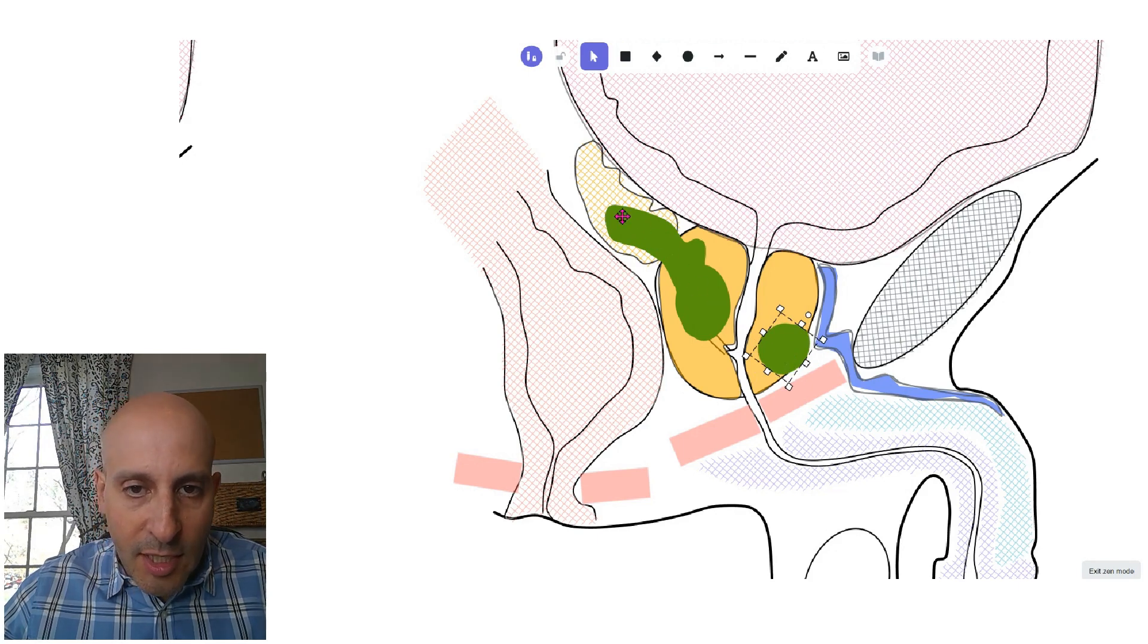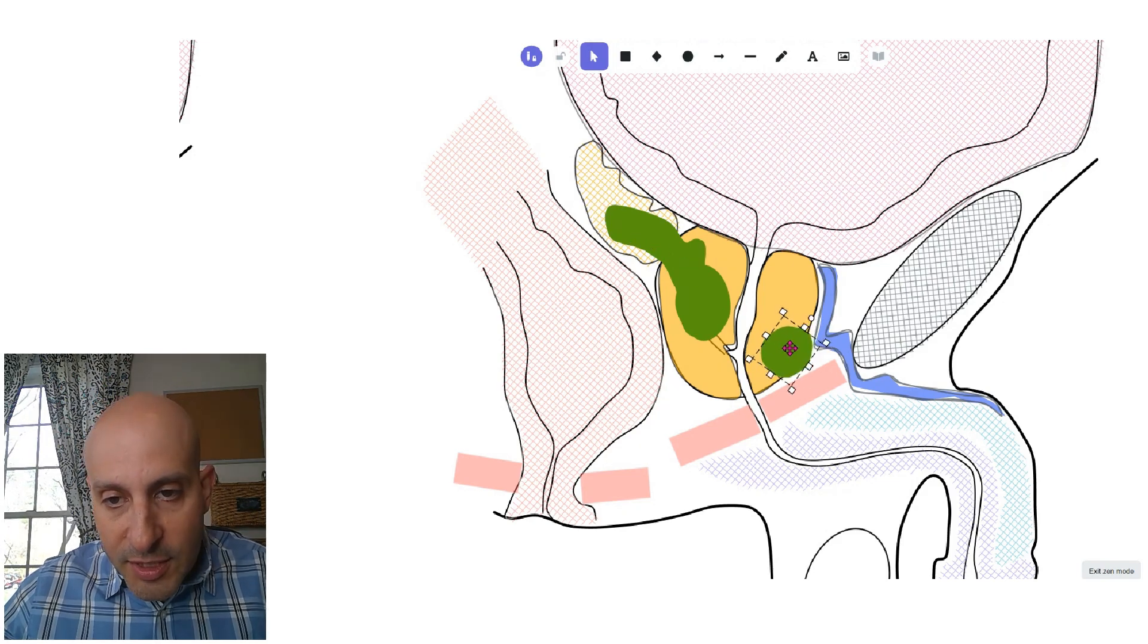The other way it can be bulging is into the seminal vesicle itself. This situation is called T3A, and this is called T3B.